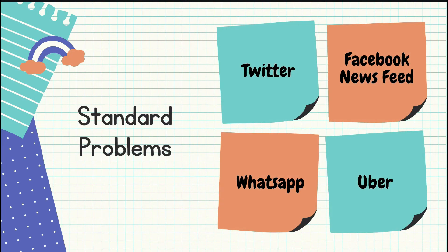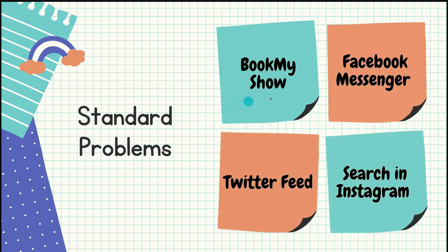When you are interviewed for a senior role, they judge whether you'll be able to take a project and design it in an efficient way — how much you know about trade-offs and how you balance them. So let's look at the most common standard problems. If you do these standard problems, you'll know more than half of what's needed. They can ask you about Twitter feed, Facebook news feed, designing WhatsApp chat or group chat, designing Uber or proximity in Uber, BookMyShow, Facebook Messenger, or search in Instagram.